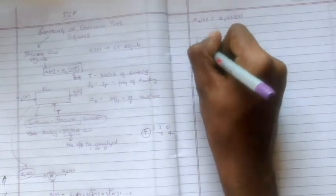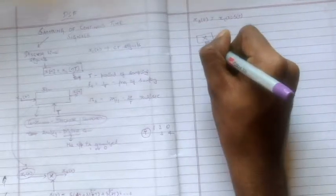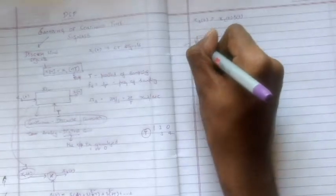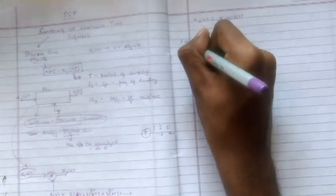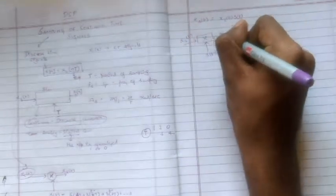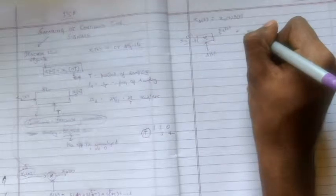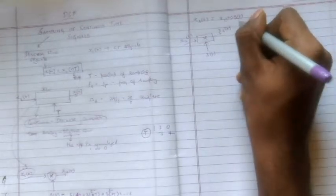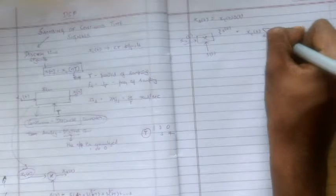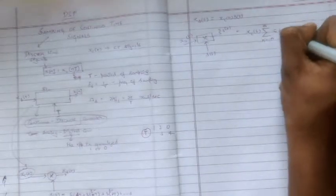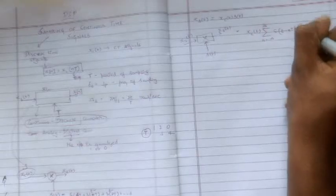xs of t is equal to xc of t into s of t. Because this was basically a multiplier unit. This was s of t. And this was xc of t, continuous time signal. We get sampled xs of t. So this is basically it.